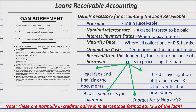Those are the details of the loan agreement you need to extract to account for the loan transaction from the releasing of the loan until the maturity date. Now, before you can account the loan, you still need two other pieces of information which are not normally found in the loan agreement.